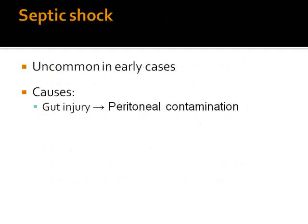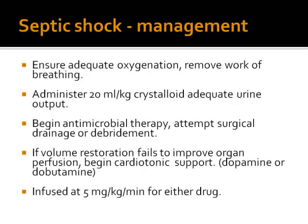Septic shock occurs in later cases in trauma patients — it can develop later when sepsis sets in as a result of neglected gut injury with peritoneal contamination. It is not a common cause in early cases. When it occurs, we manage it by ensuring adequate oxygenation, and possibly ventilating the patient. We give crystalloids and antimicrobial therapy, and surgical treatment as required. Because it is a form of distributive shock, inotropes do work.